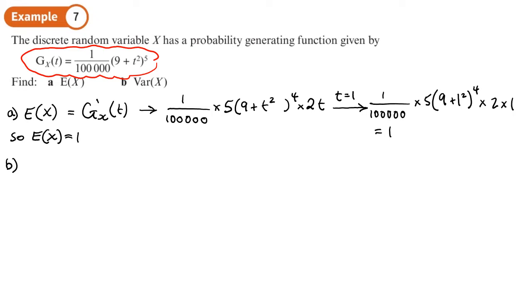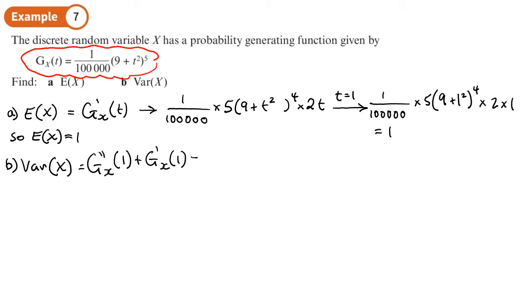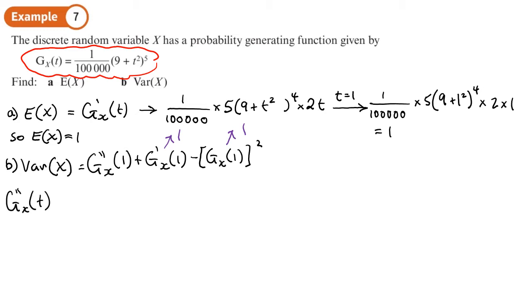We'll write down the formula just to remind us. We know we need to differentiate a second time. We know that we substitute 1 in, then we basically add E of x, and then subtract E of x squared — the mean squared. So we know that E of x is 1, and the mean squared is also going to be 1, from the previous part. So we just need to differentiate a second time to find g double-dash.